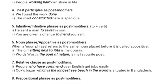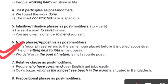Noun phrase or appositive: a noun phrase acts as a noun — it is a phrase but acts as a noun, also called an appositive. When a noun phrase refers to the same noun placed before it, it is called an appositive. An appositive gives extra information about a noun to make its meaning more specific and clear. For example: 'The girl sitting next to Rita is my cousin' — 'sitting next to Rita' is a noun phrase or appositive. Another example: 'Wordsworth, the poet of nature' — 'the poet of nature' gives extra information about the noun 'Wordsworth.'